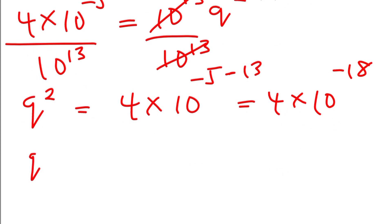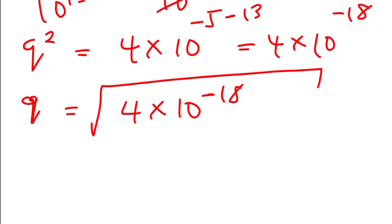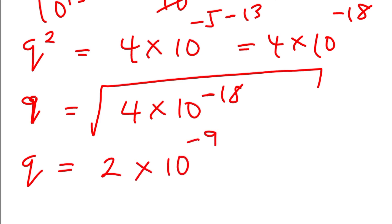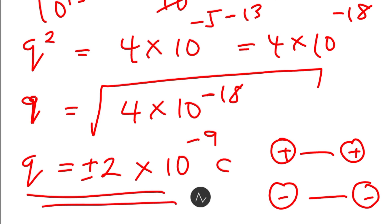Therefore q equals the square root of four times ten to the power of negative eighteen, which gives q equal to two times ten to the power of negative nine coulombs. We also need to note that the two point charges can be positive-positive or negative-negative. So here's the final answer. Goodbye.